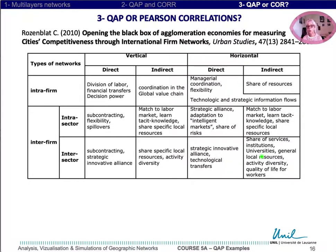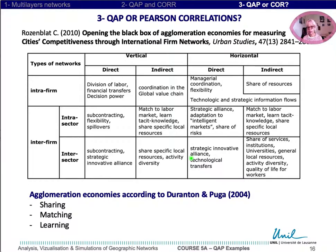All of these relations compose the agglomeration economies that we can summarize by the sharing, matching, and learning framework of Duranton and Puga.